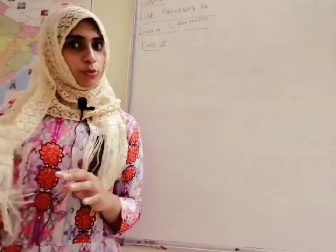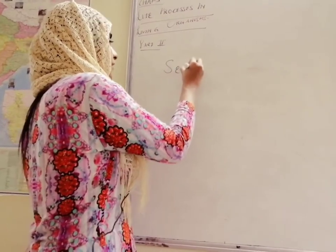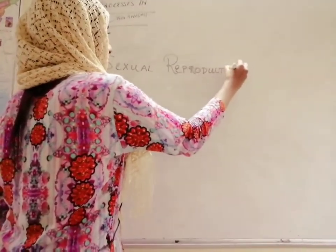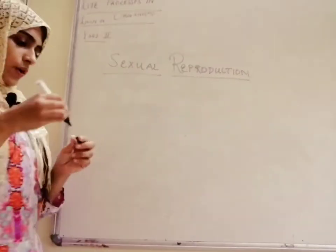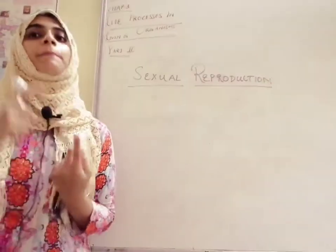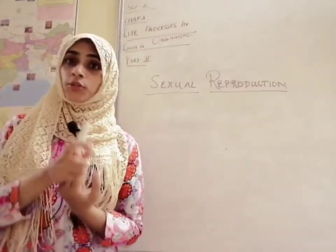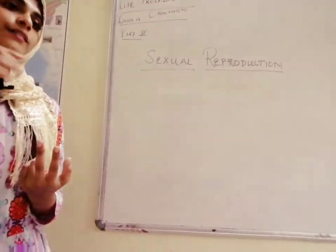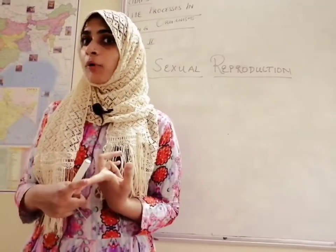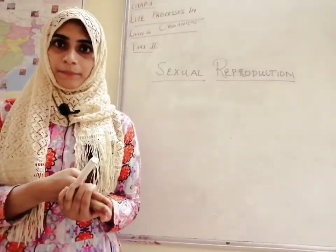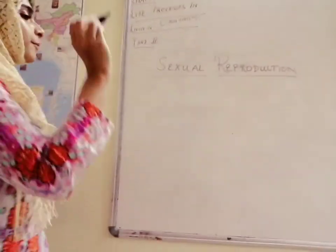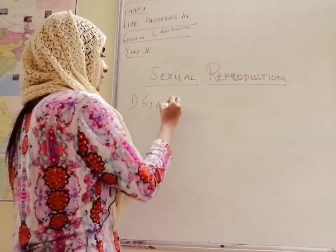We have now completely covered asexual reproduction. Let us now begin with sexual reproduction. In sexual reproduction, two parents are involved — one male parent, one female parent. There is fusion of gametes — male gamete and female gamete. The offspring is similar to the parent but not identical. Fewer offspring are produced, and sexual reproduction is a slow process. Sexual reproduction has two steps: gamete formation and fertilization.